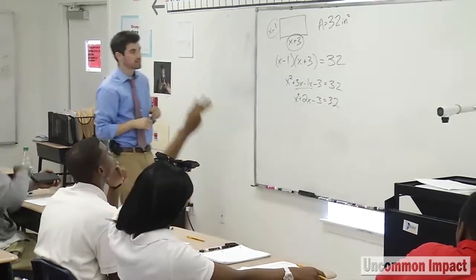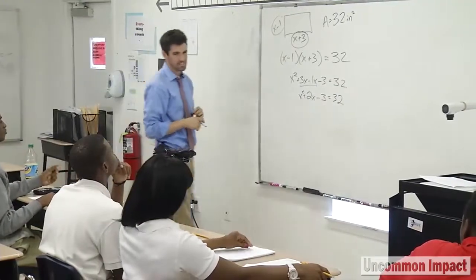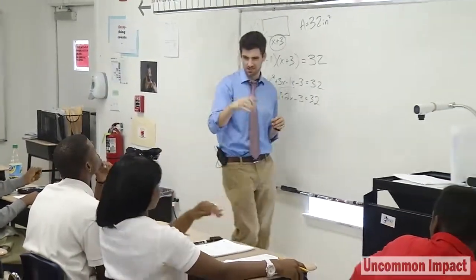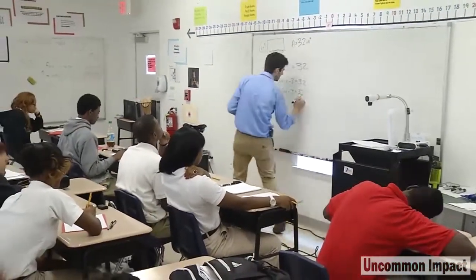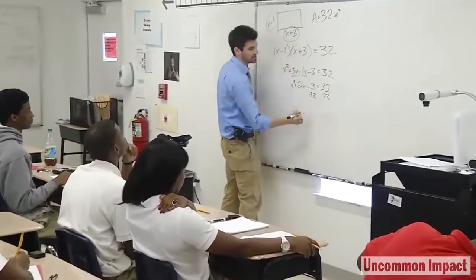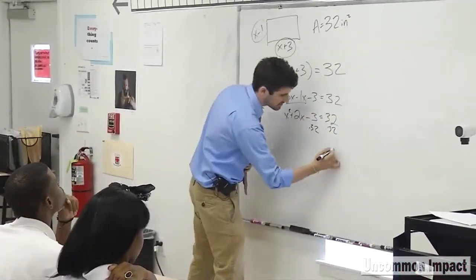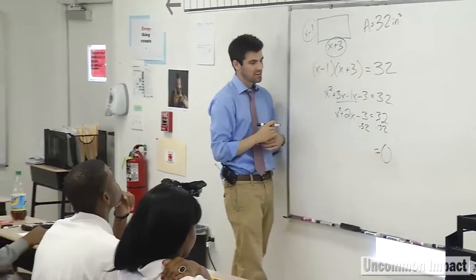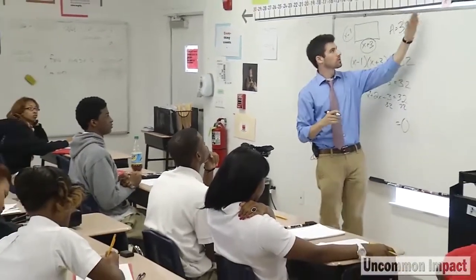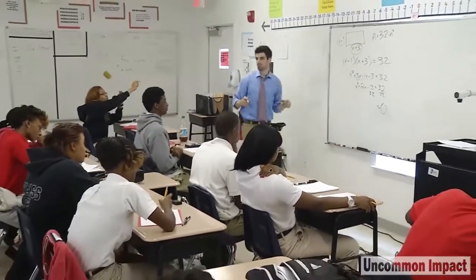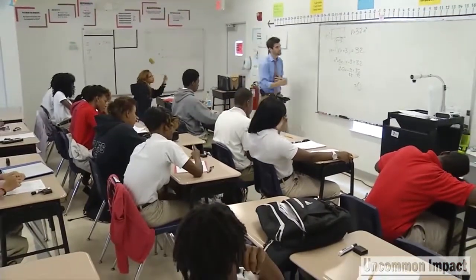Terry, you have to have that equation equal to 0. So what do I need to do in order to make this equal to 0? Subtract 32 from both sides of the equal sign. 32 minus 32 is 0. Negative 3 minus 32 — we were 3 steps from 0, we took 32 more steps from 0. Where do we end up? Negative 35.